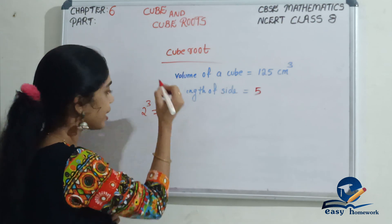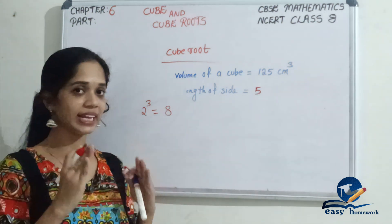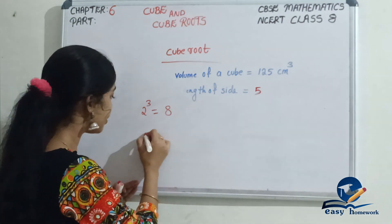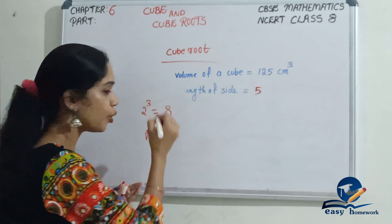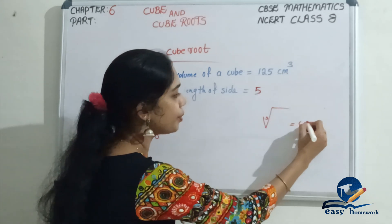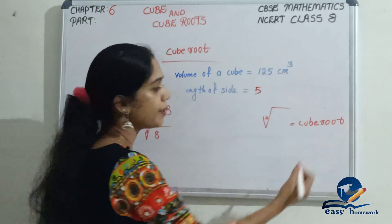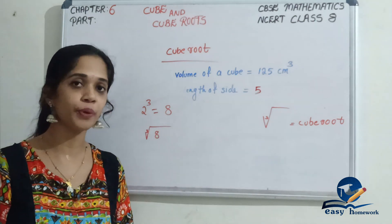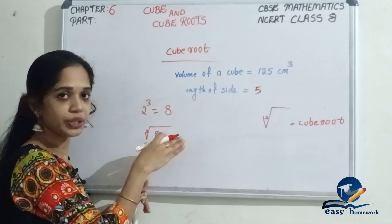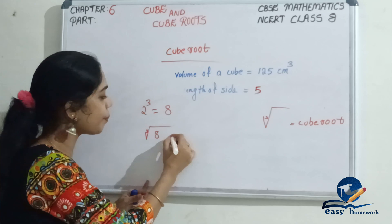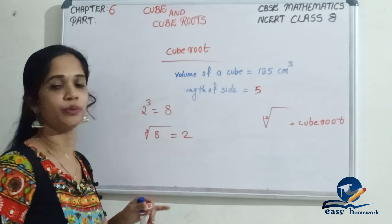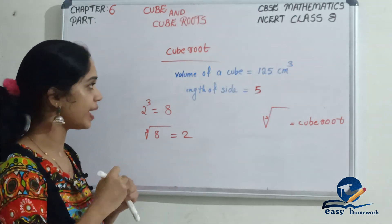Let's check another example. 2 cubed is 8. Okay? 2 cubed is 8. Then the cube root of 8 — here is the cube root symbol. When we do the inverse operation: 2 cubed equals 8, so the inverse operation gives us the cube root of 8 equals 2. So the cube root of 8 is equal to 2.